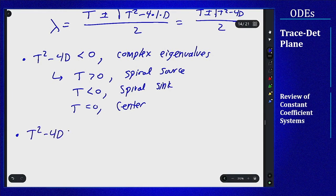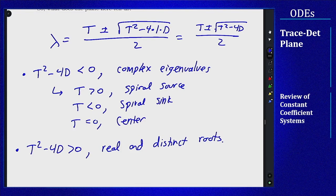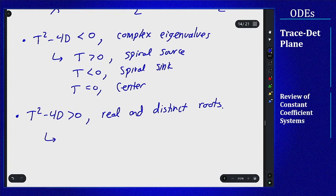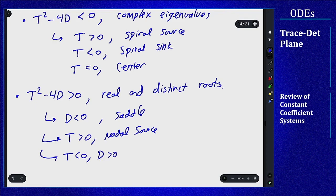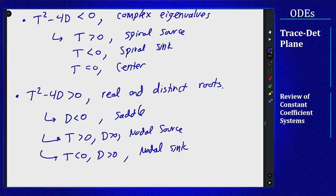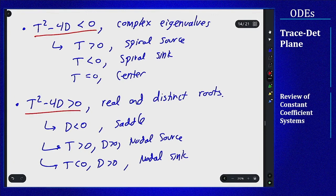T squared minus 4D positive means real and distinct roots. If that's the case, we still have three different options here. We have saddles, sources, and sinks. But how do I know when I have a saddle? Well I have a saddle where my eigenvalues are opposite signs. The determinant is the product of the eigenvalues, and so if that's negative, that means I have two opposite sign eigenvalues. And so from here, D is negative means I have a saddle. And then if T is positive, I get a source, and if D is also positive. And then T negative D positive means I have a nodal sink. Because the D positive means both eigenvalues are the same sign, and if T is positive, the T plus root is positive, so all the eigenvalues are positive, and therefore we get a nodal source.